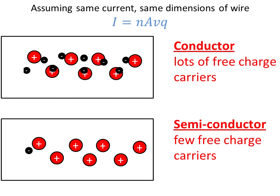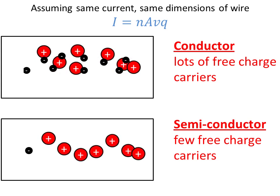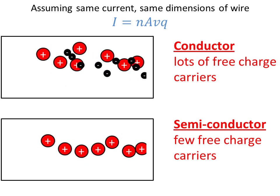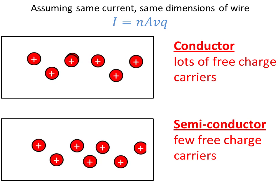Now, if we assume that the same current is going through both these materials and the dimensions of the wires are the same, then what we notice is that the electrons in the conductor have to move much more slowly than they do in the semiconductor.